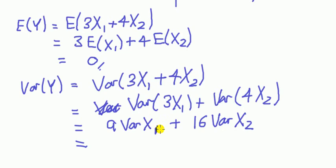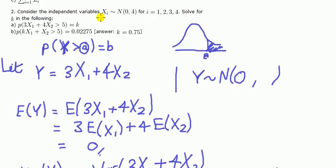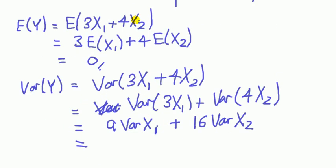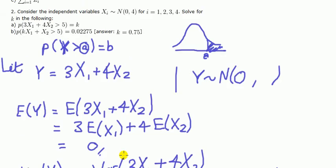Now what's the variance of x1 and x2? The question we're told that the variance of each of the x's is 4. So we just put that in. 9 times 4 plus 16 times 4. That comes to 100. So up here we can put 100. That is what we want.